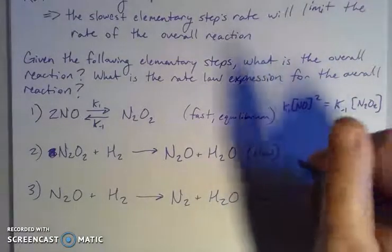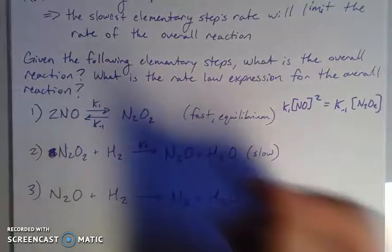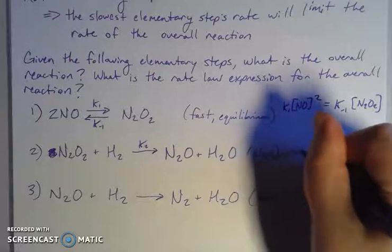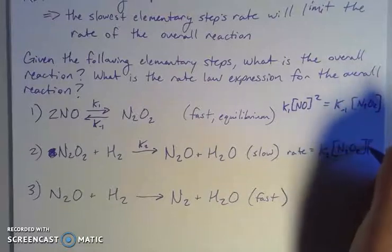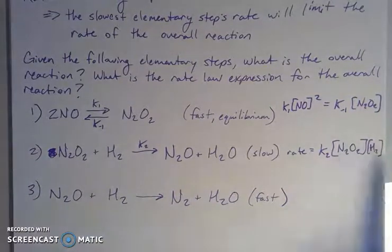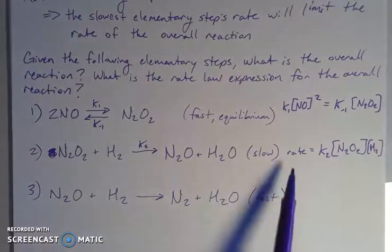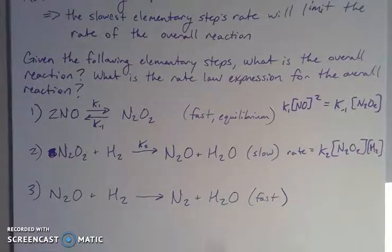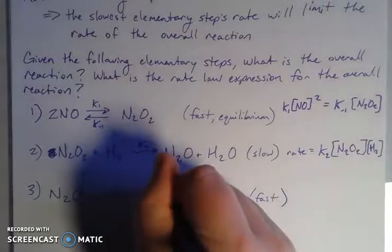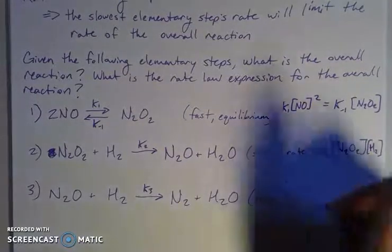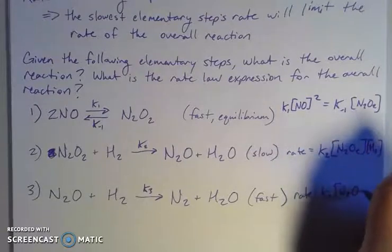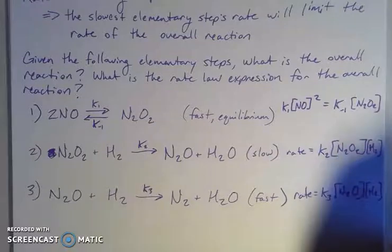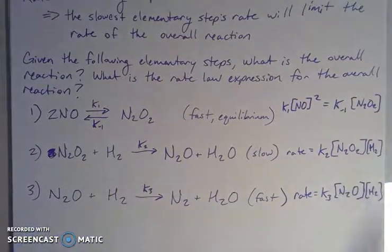The next step is slow, so we know this rate is going to impact our overall reaction — let's call this k₂. The rate here equals k₂. Since these are elementary reactions, we take into account how many there are: concentration of N₂O₂ times the concentration of hydrogen. The third step is fast, so it won't greatly impact the overall rate, but let's figure it out for practice: k₃ times [N₂O] times [H₂], one to one, raised to the first powers.